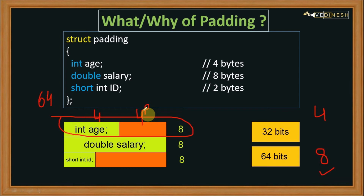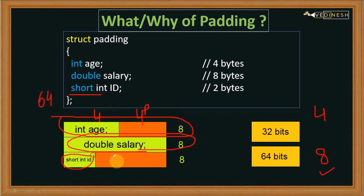For salary, which is eight bytes, the OS reads it in one go. But after that, short int takes only two bytes, so the remaining six bytes are added as padding again. The total padding done is 10 bytes.